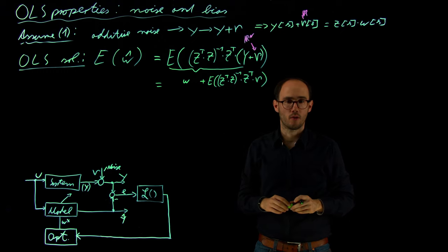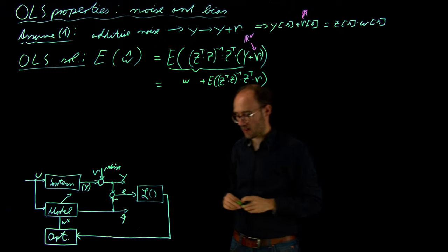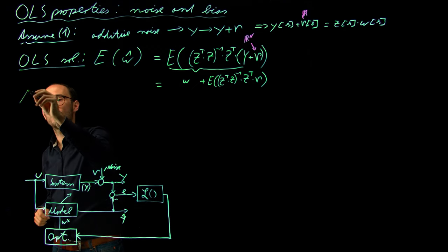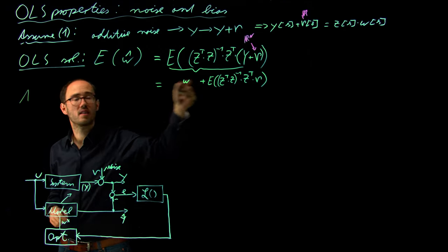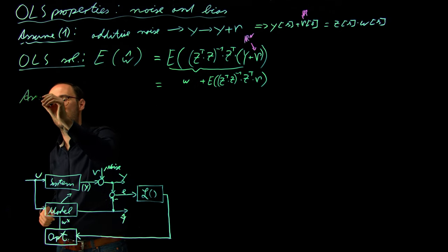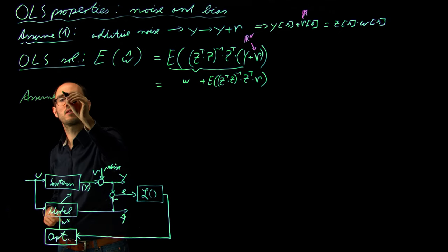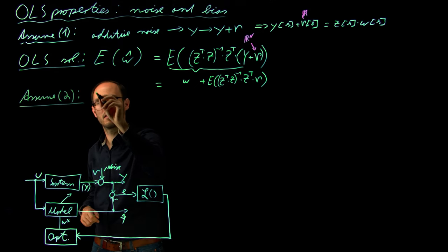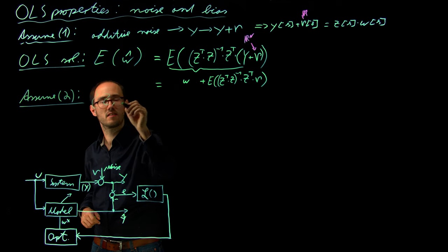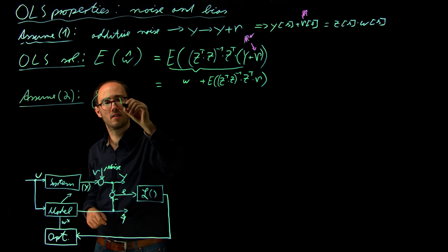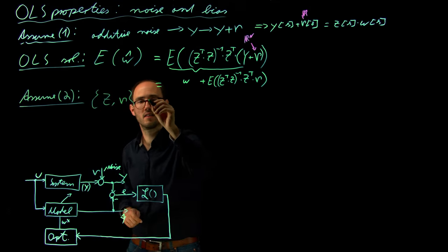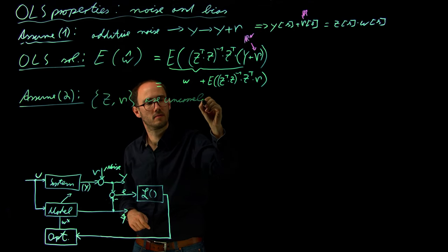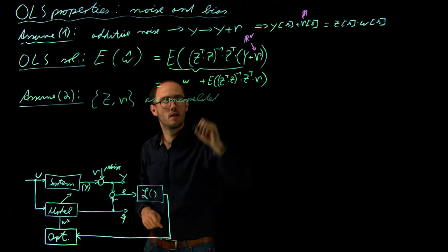Okay, let's study the impact of the noise more closely. And for that, we will apply certain assumptions. The next assumption, which we apply to investigate this more closely, is that we are going to assume as a second assumption that the regressors and the noise are uncorrelated.